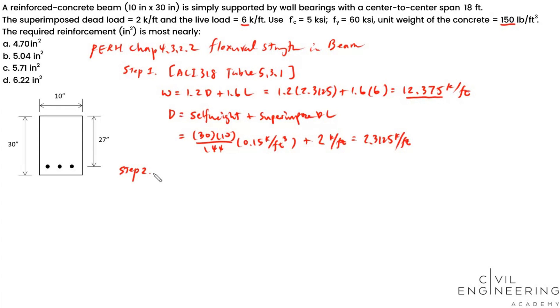Step 2, we need to determine the maximum moment for this simply supported beam. This is going to be WL squared divided by 8. You can also take a look at PE reference handbook in chapter 4.1.7. There's a table you can reference from. In the very first item, it's the one with a uniform distributed load. WL squared divided by 8, you get 12.375 times L, which is 18 squared divided by 8. This is 501.19 kip-foot. So now we got our maximum moment calculated, 501.19.